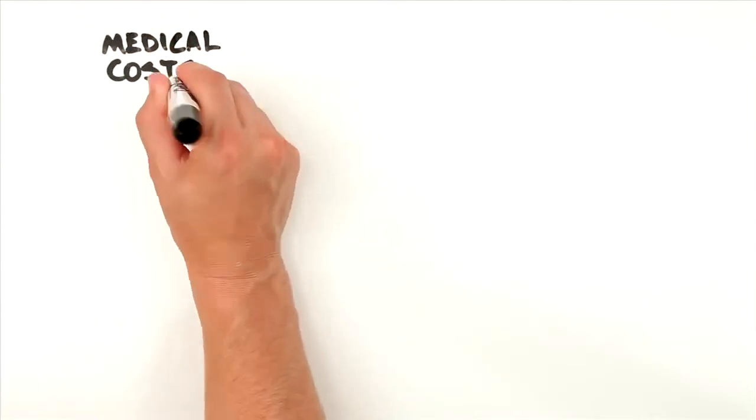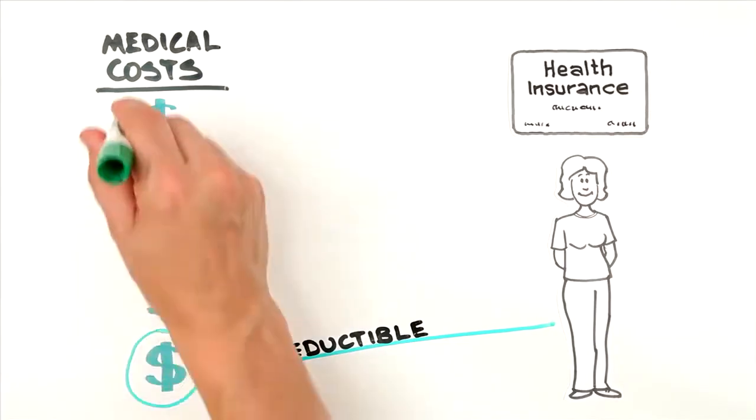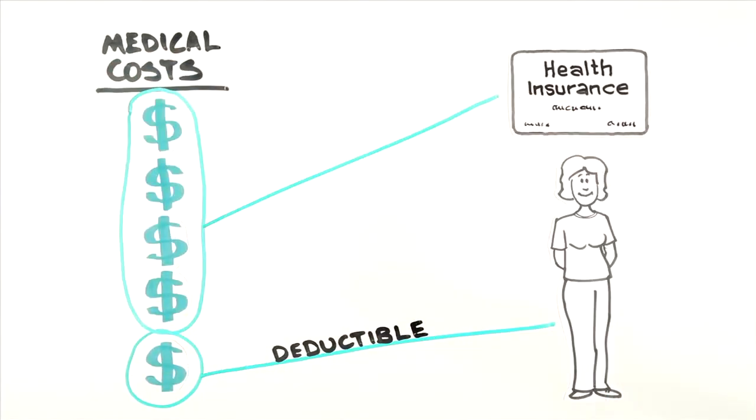Your deductible is the amount of your medical costs that you have to pay before your health insurance begins to pay. These amounts can vary dramatically between different plans.